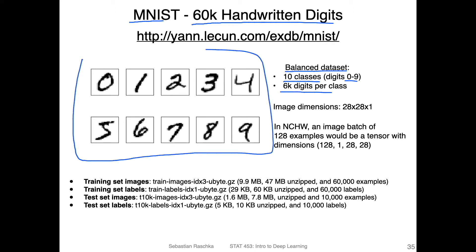Here's an example of how these digits look like. Each of these training examples has an image dimension of 28 times 28 times one — 28 for the height and 28 for the width. So this is the number of pixels, giving us in total 784 pixels of features per training example.